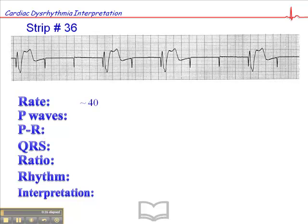The heart rate is really based on the captured beats. So here we have a wide QRS, and then another one, and then another one, and then another one way over here. So we have four captured beats in about a six-second strip — it might be a little longer. Multiply that by 10, we've got a heart rate of about 40. So now we have a bradycardic rhythm, and this is a bit of a problem.